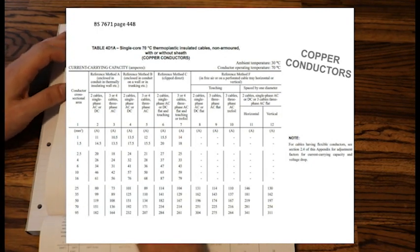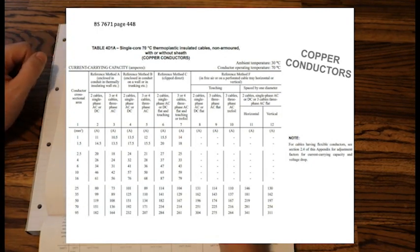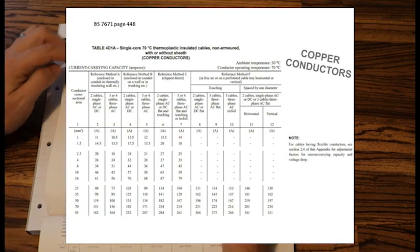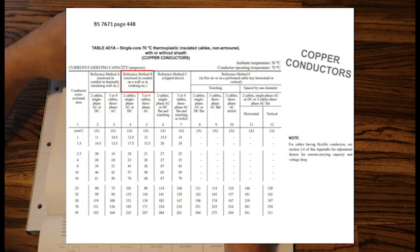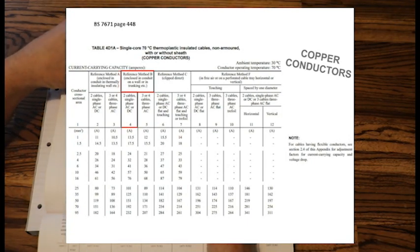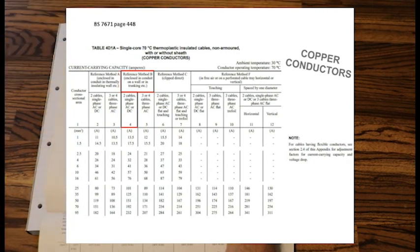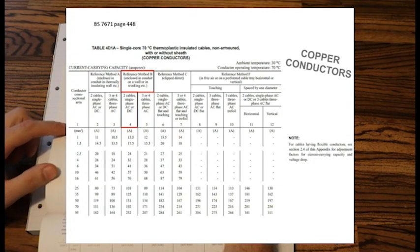Now we need to know the reference method. Our question was inside trunking it said, so we are reference method B, enclosed in conduit, on a wall, or in trunking. And we are single phase, so column 5 says 3 phase, column 4 says single phase, so we are column 4, and our IZ was 13.6, so we need 13.6 or above.